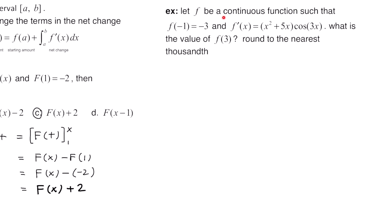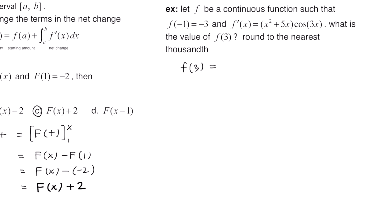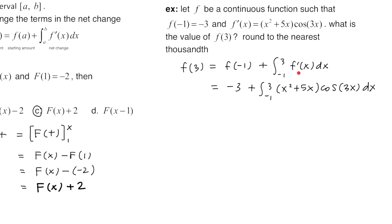This example says let f be a continuous function such that f of negative 1 is negative 3, and f prime of x equals x squared plus 5x times cosine of 3x. What is the value of f of 3 rounded to the nearest thousandth? We're going to use the net change theorem: final amount equals starting amount plus the integral from a to b of f prime of x dx. So we write f of 3 equals f of negative 1, which is negative 3, plus the integral from negative 1 to 3 of f prime of x dx.